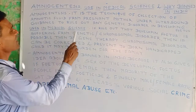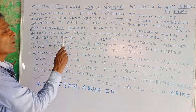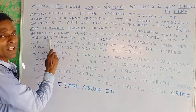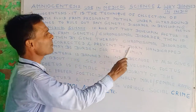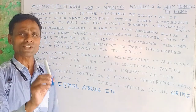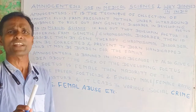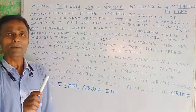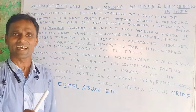The use in medical science: if it is found that the developing fetus is suffering from a genetic or chromosomal disorder, then, if possible, by gene therapy the chromosomal or genetic disorder can be corrected. This helps in prevention of the birth of a handicapped child, who may otherwise be a burden for the family. With the help of ultrasound and amniocentesis, genetic and chromosomal disorders can be identified and treated through gene therapy.